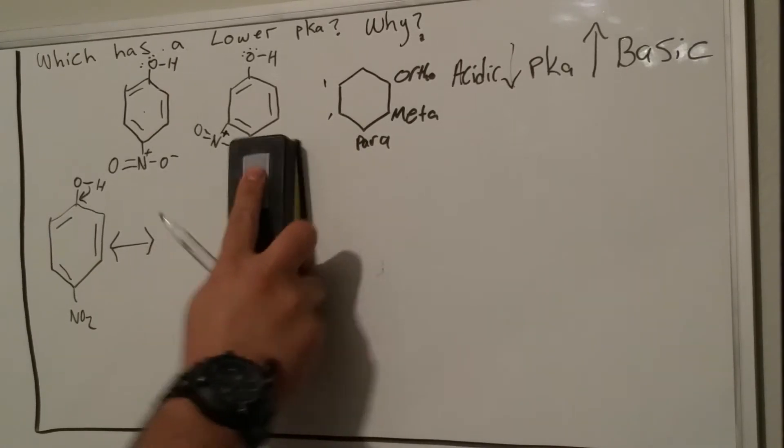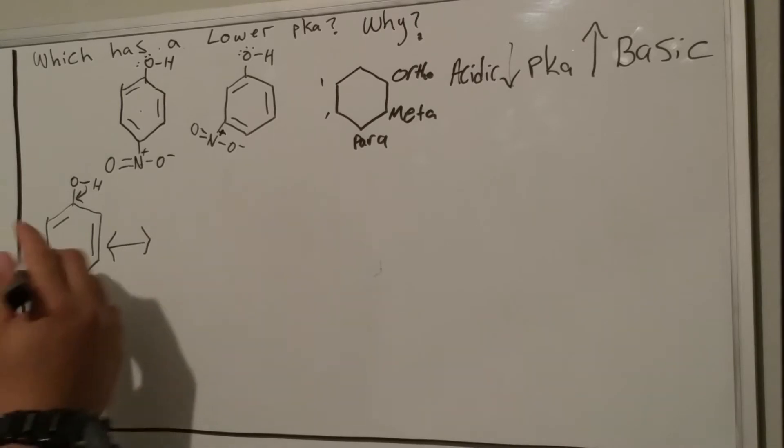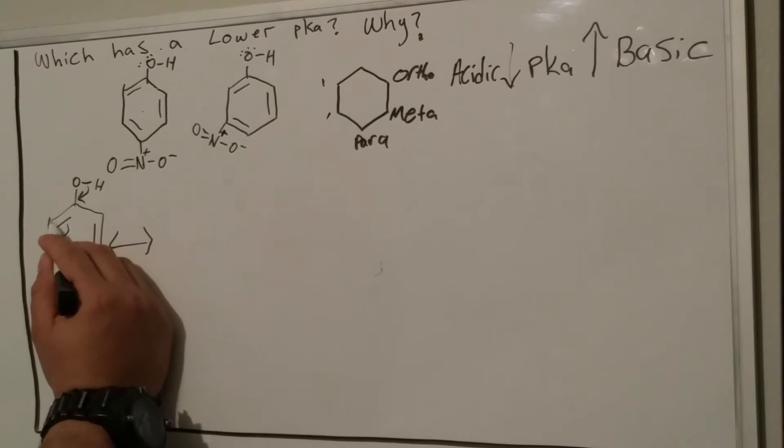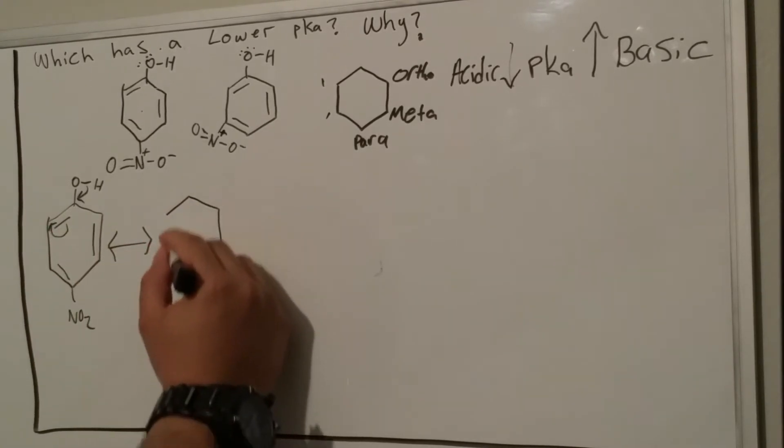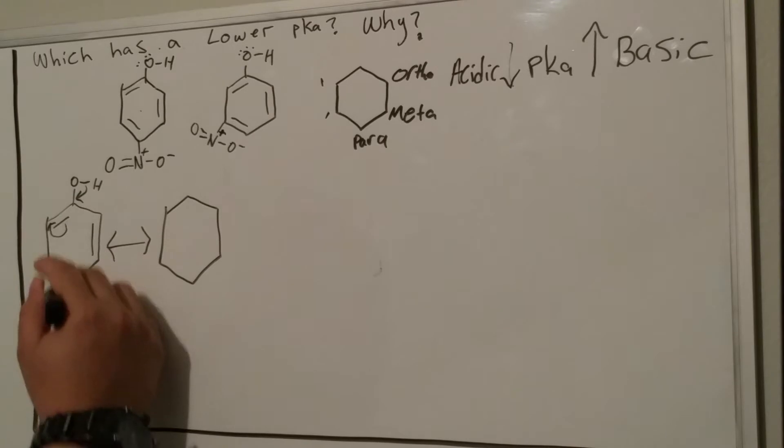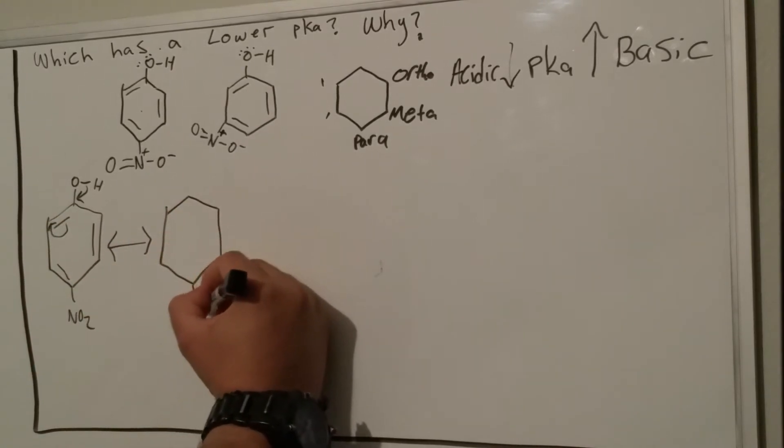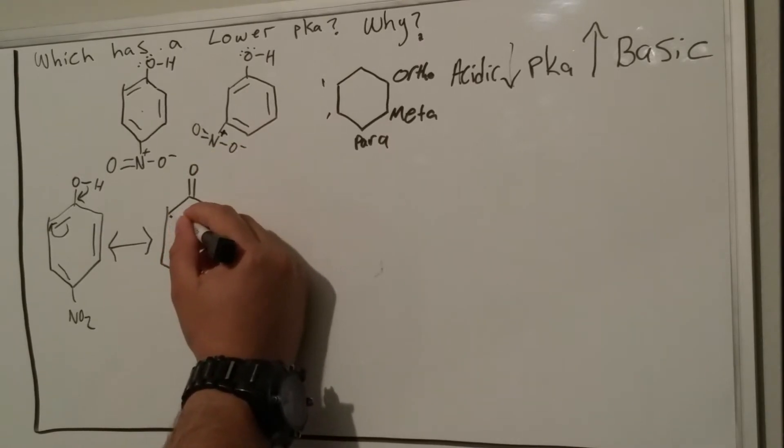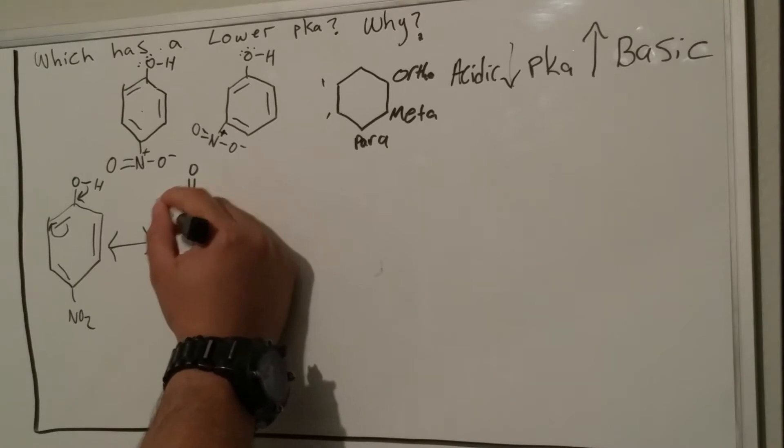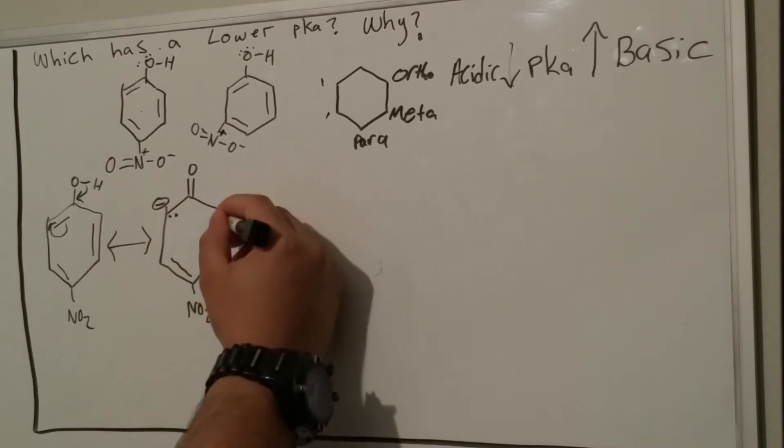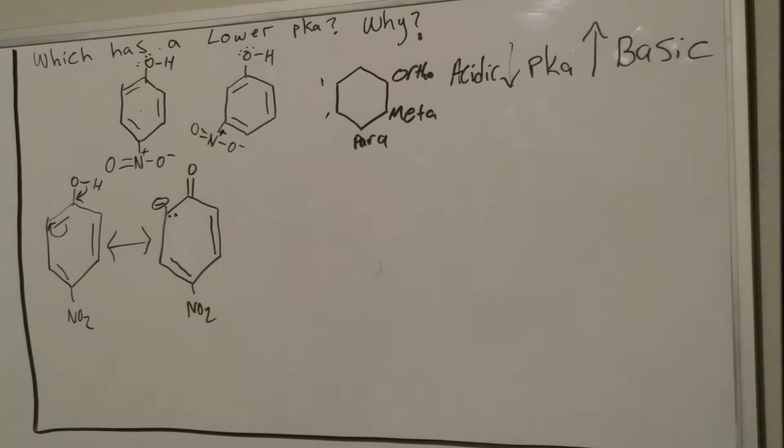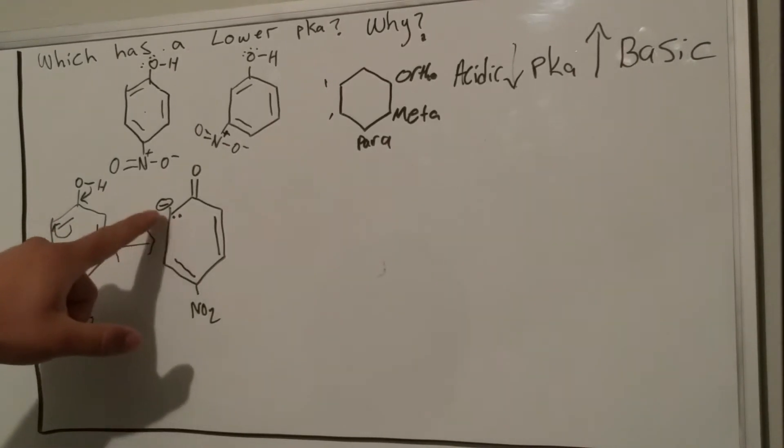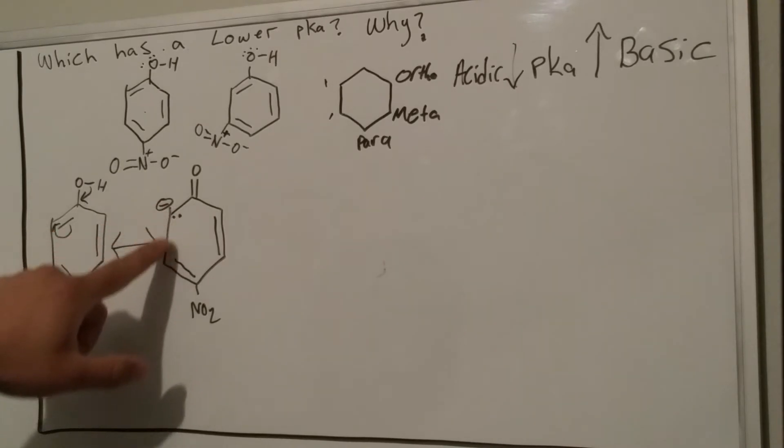What you want to do is these pi electrons here are going to that carbon. The intermediate before this pi bond here is formed is this carbon is going to get the lone pairs, giving this carbon the negative charge, as we see here.